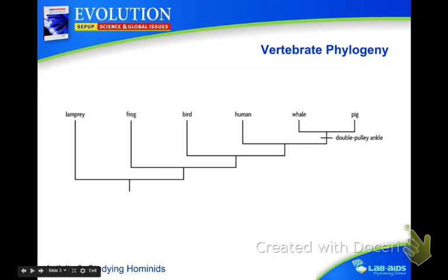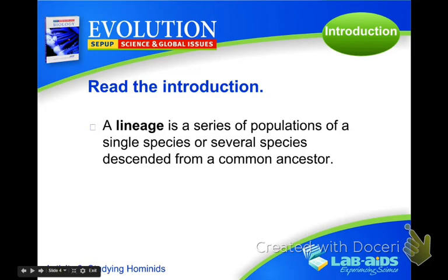Today we're going to do the same idea, but we're going to look at the lineage of hominids. Y'all gave me examples of hominids being gorillas, chimpanzees, humans, Homo sapiens, Homo erectus, and Australopithecus — the one I can't pronounce. We're actually going to look at that one today. So we're going to study these relationships within the hominids.